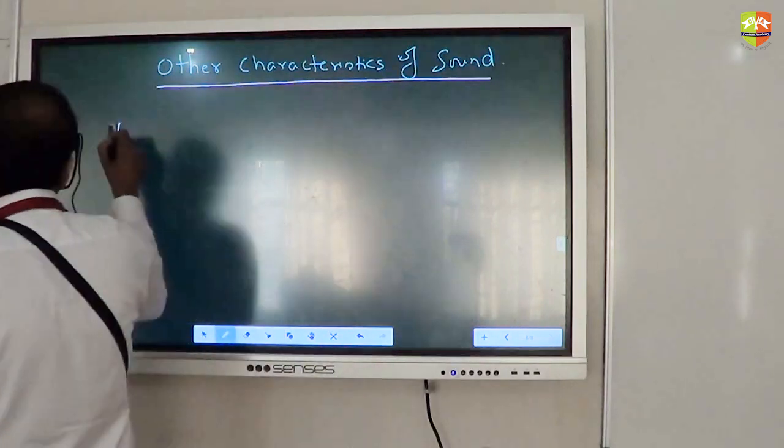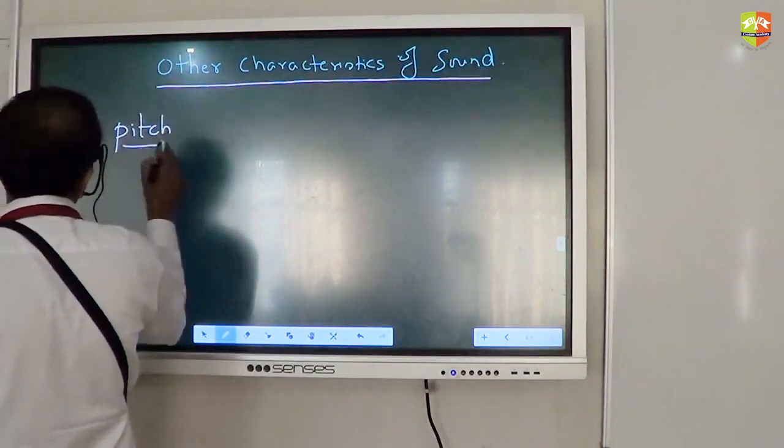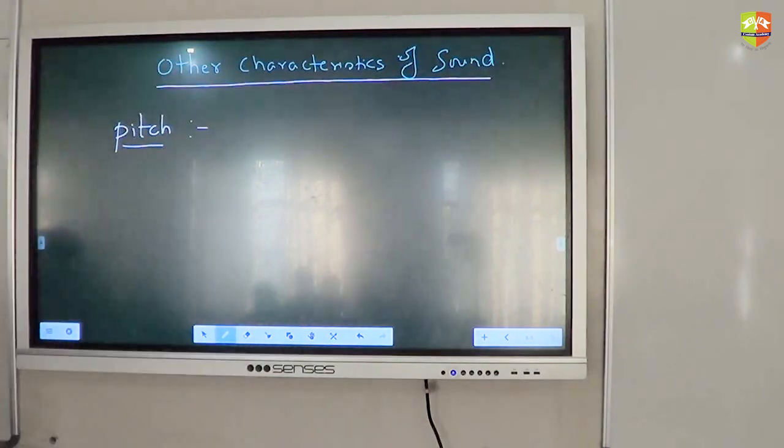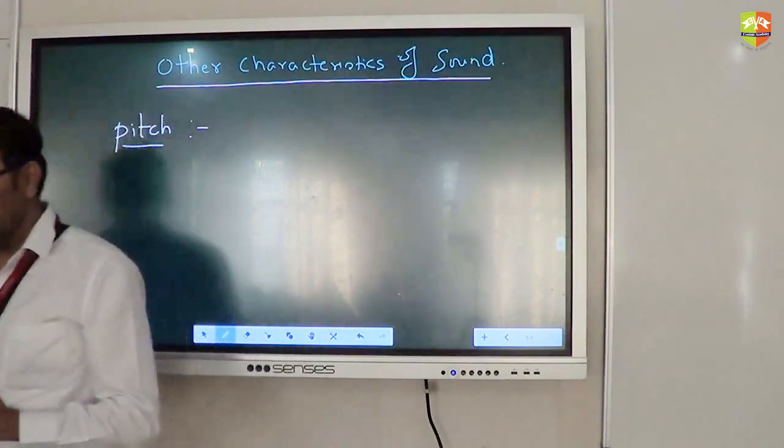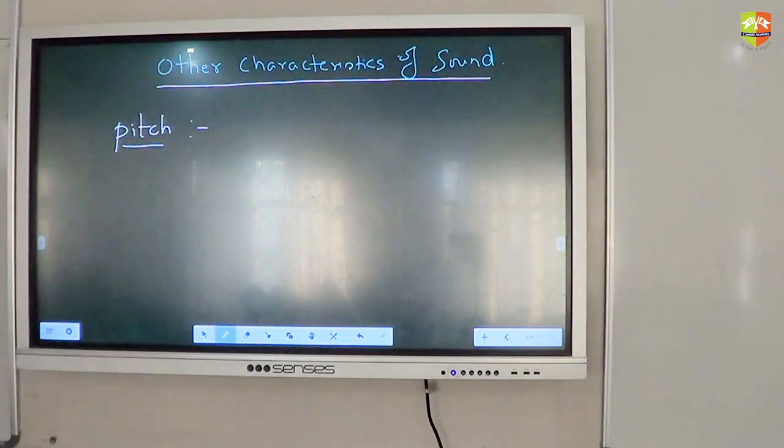So, first thing is pitch. Write down, how the brain interprets the frequency of an emitted sound is called pitch. Basically how brain interprets it. Brain might have limitations. Human brain may not be able to interpret all kinds of frequencies. But if humans can, then that is the pitch.